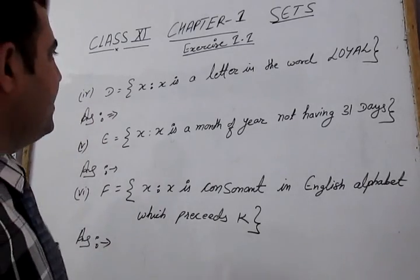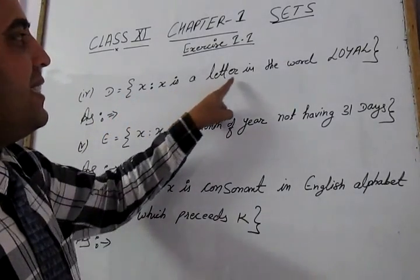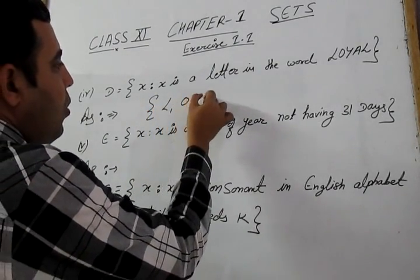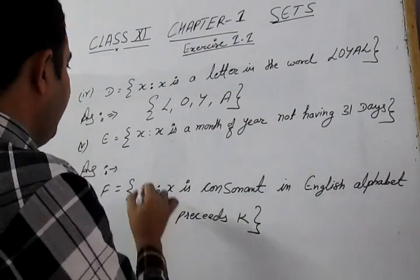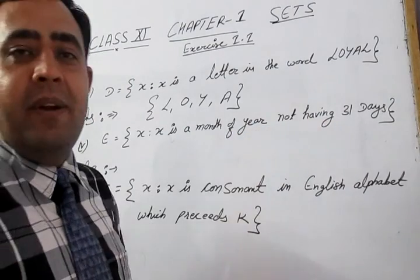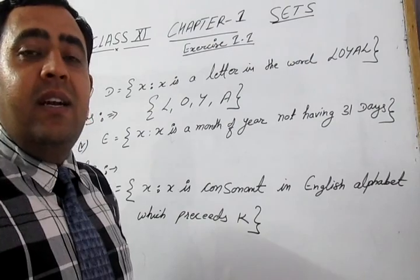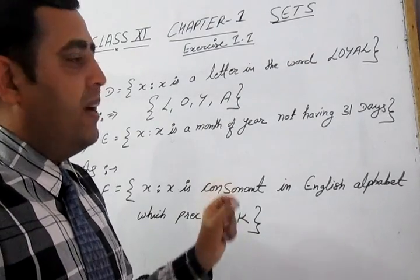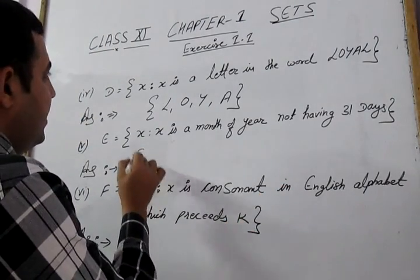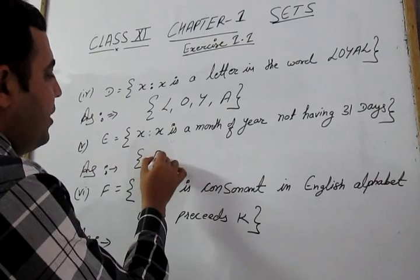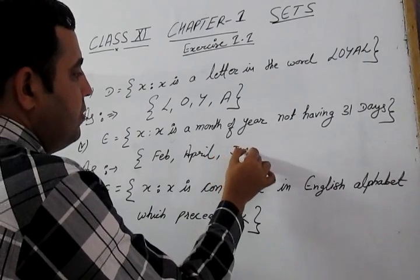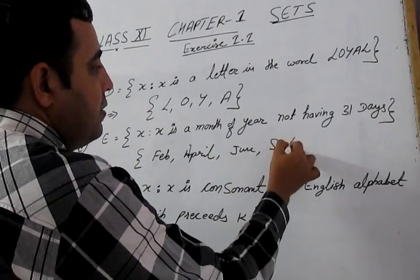Part D: x such that x is a letter in the word 'loyal'. The answer is {L, O, Y, A}. Part E: x such that x is a month of the year not having 31 days. Those months are February, April, June, September, and November.